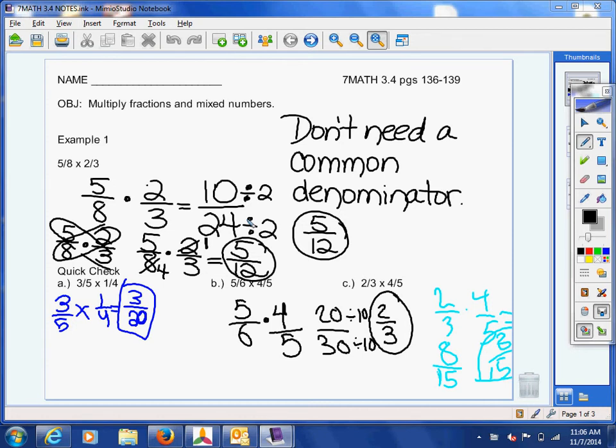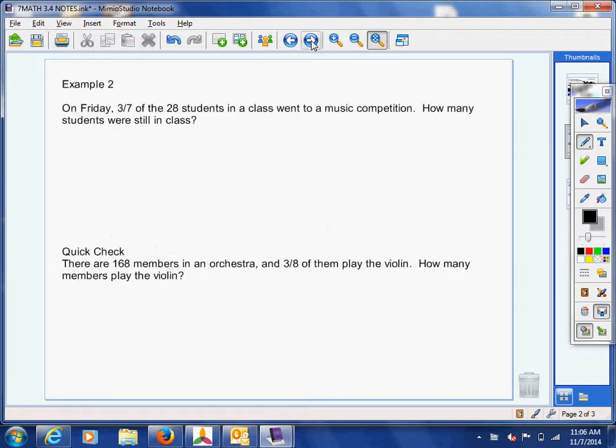We're going to jump back into section 3.4 in our books today, and we did example one yesterday. We learned how to multiply fractions, and then you guys, as you may recall, you showed me that you knew how to multiply five-eighths times two-thirds. We did a couple of different strategies, and then you guys came up to the quick checks and showed me that you knew how to do it. So we're going to move on, so flip the page.